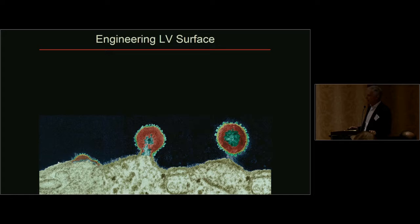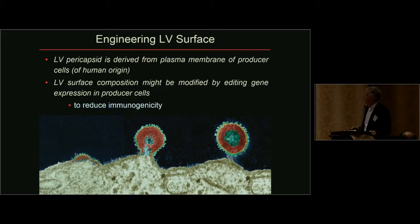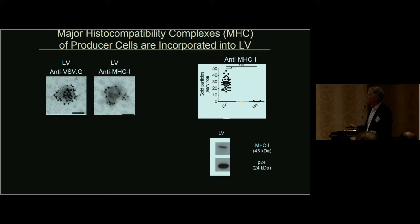Talking about lentiviral vectors — these are enveloped membrane viruses that bud from the producer cell, from which they acquire the outer envelope. Most of the proteins exposed on the surface of the vector, beside the viral envelope protein, actually come from that cell — in our case, human cells — which could be an advantage. At the same time, we can modulate the surface by modulating gene expression in the producer cell, essentially predicting what composition of that membrane will be part of the virus.